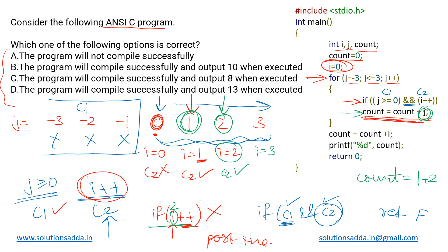In the last iteration j is three and i is three — both conditions are satisfied. The statement executes and j=3 is added to count, making count equal to six. i is incremented to four. Then j becomes four, breaking out of the loop since the condition was j less than or equal to three.